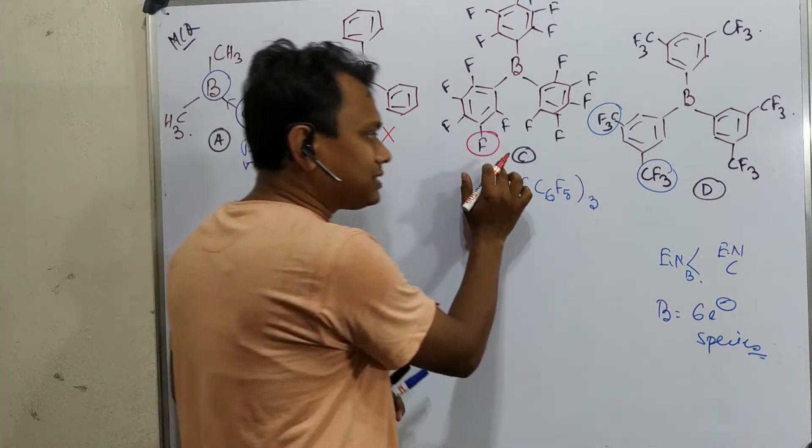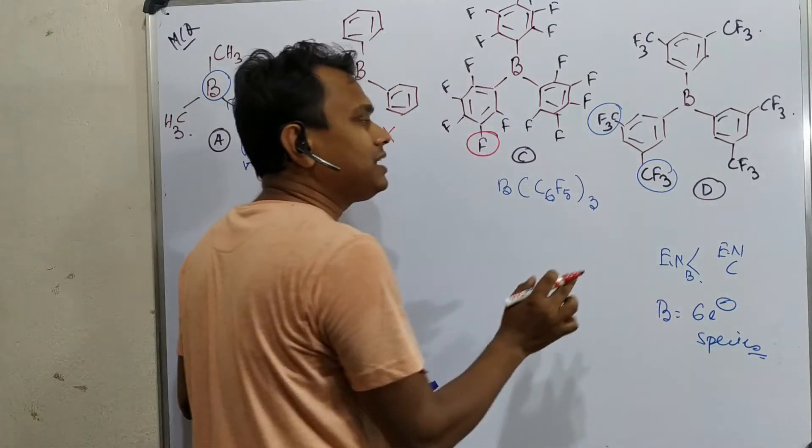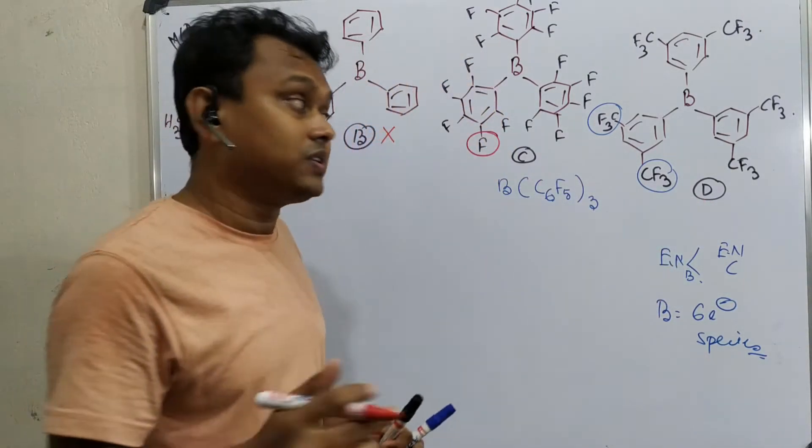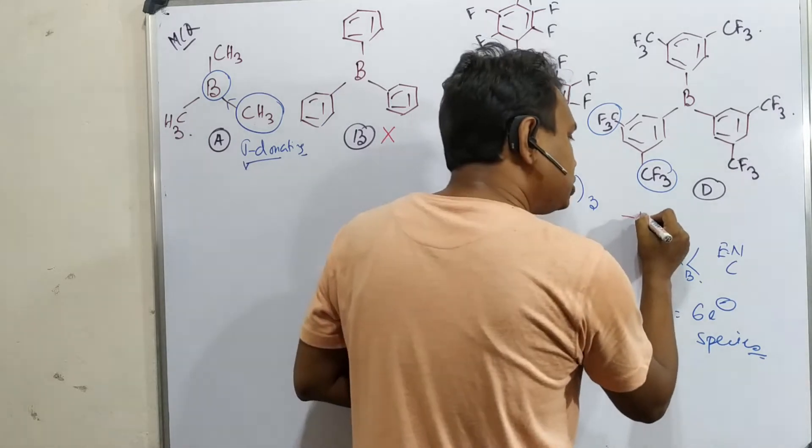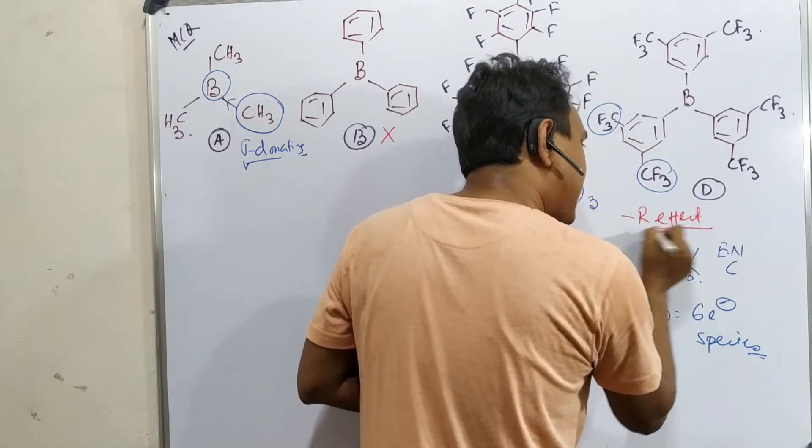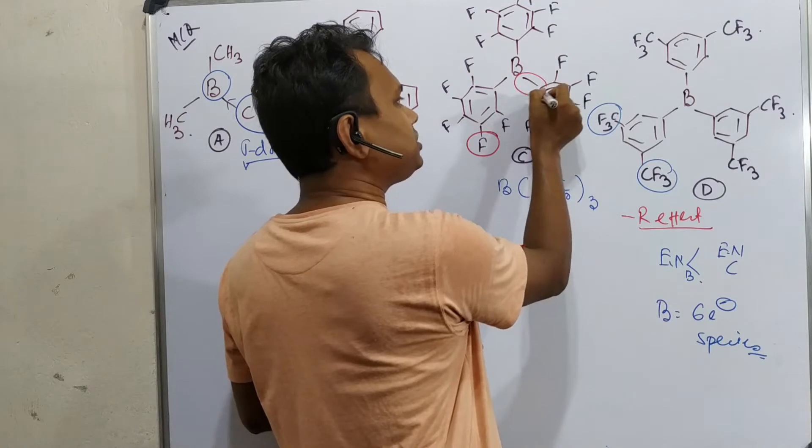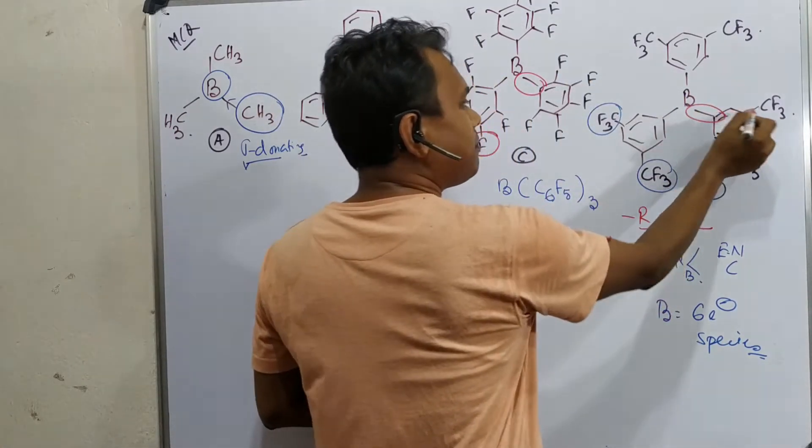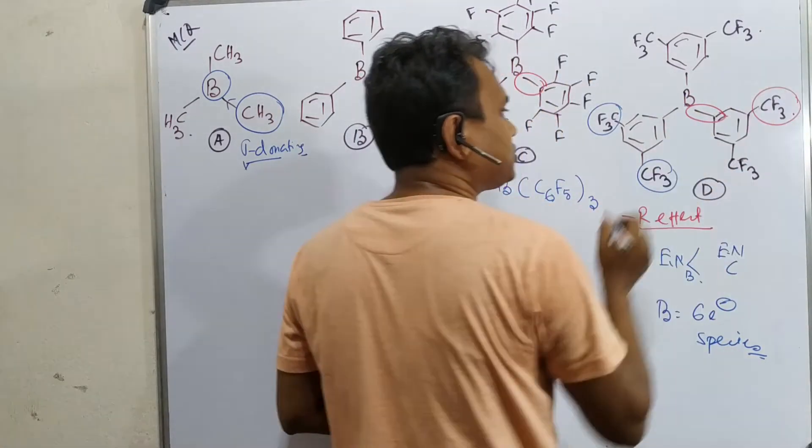This withdrawing effect of fluorine is more and CF3 is also a withdrawing group. So option B cannot be the answer because electron-withdrawing atoms are present. Now the real question is, which one C versus D, which one has maximum minus R effect? Because this donation is with carbon, that's fine, similar, but it depends on the substituents.